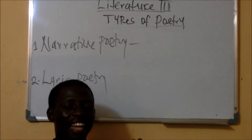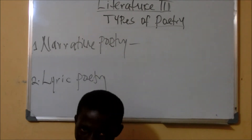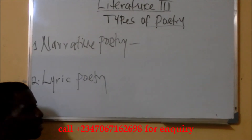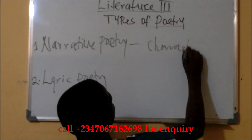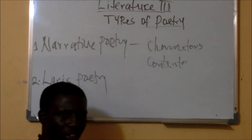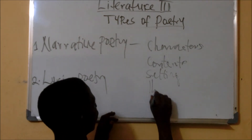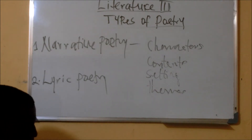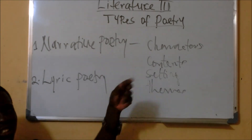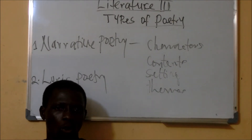Narrative poetry is long in its narration or exposition — longer than every other form of poem. Narrative poetry has some elements: we have what we call characters, we have content, we have setting, and we have themes. This means that in every narrative poetry there are characters, which is very unusual in normal poetic form.